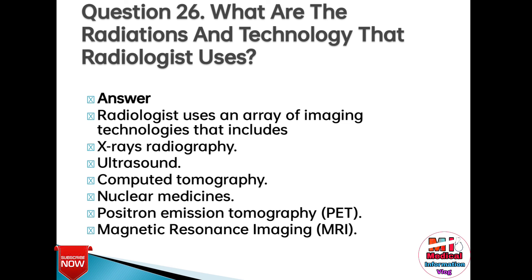Question 26: What are the radiations and technologies that a radiologist uses? Answer: Radiologists use an array of imaging technologies including X-ray radiography, ultrasound, computed tomography, nuclear medicine, positron emission tomography (PET), and magnetic resonance imaging (MRI).